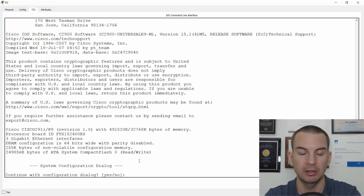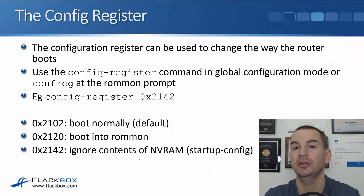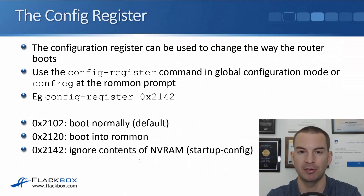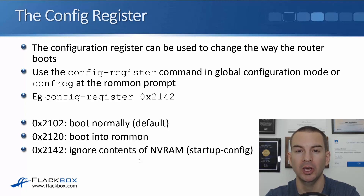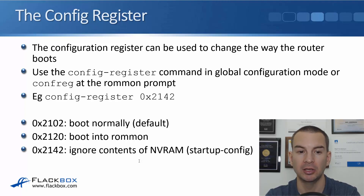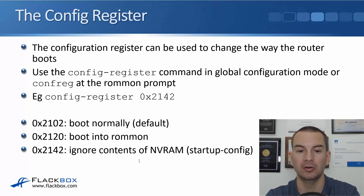Go back to the slides now and have a look at how to do the password recovery. First, you need to know about the configuration register. That is used to change the way that the router boots from the default. You can use the config-register command in global configuration mode, or if you're at the ROMMON prompt where the router or switch hasn't completed booting yet, you can use the confreg command. For example, we could use config-register 0x2142 at global config, or confreg 0x2142 at the ROMMON prompt.